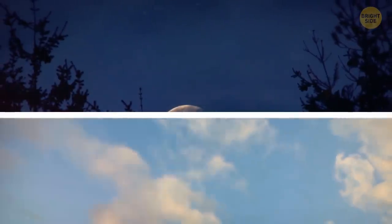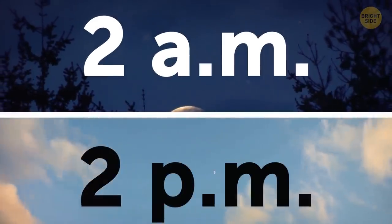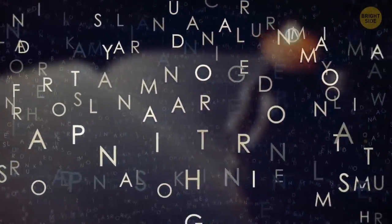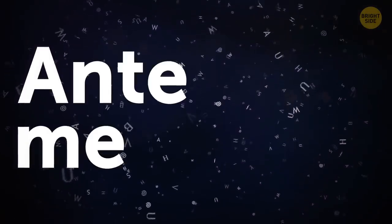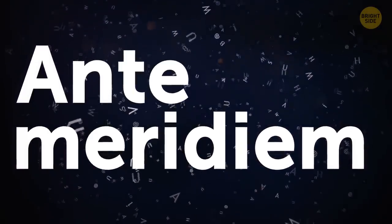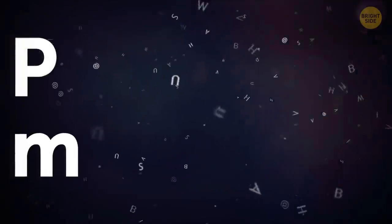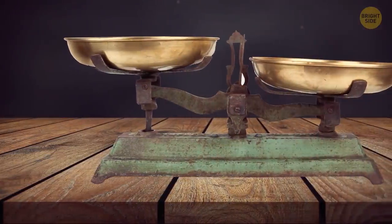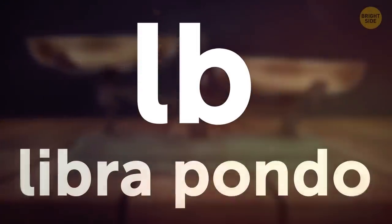We say it all the time, 2 a.m. and 2 p.m., without thinking. Why such a choice of letters? It's just Latin, which is still used for many other abbreviations. A.m. stands for ante meridiem, which means before noon. P.m. stands for post meridiem, meaning afternoon. Same with pounds, which are noted as L.B. from the Latin phrase Libra Pondo.